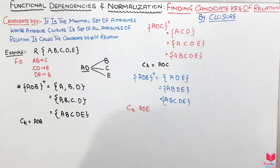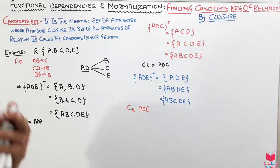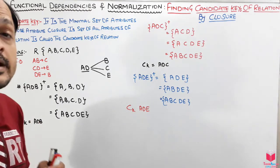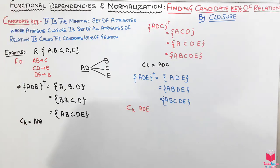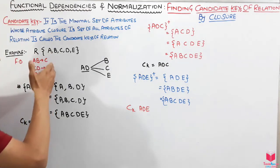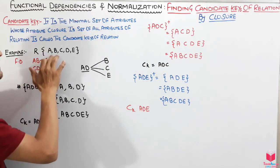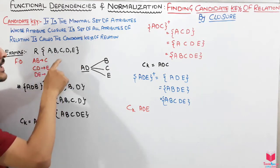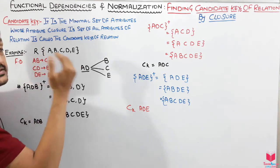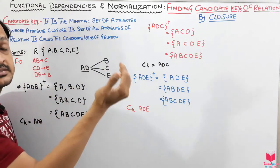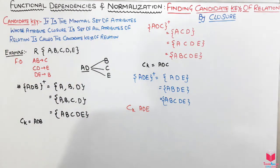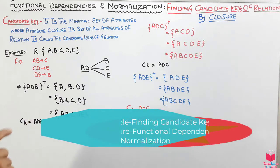In the next video, we will take an example where all attributes appear on the right-hand side of functional dependencies, and see how to solve that kind of question.